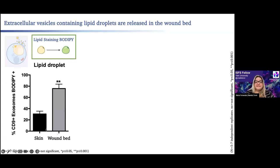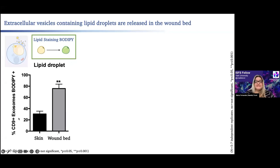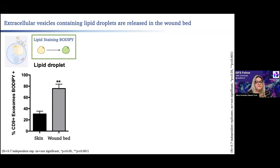To our surprise, the skin actually produces these extracellular vesicles even without a wound, but during the wounding process, after 24 hours we have a great increase. More than 80% of these extracellular vesicles are carrying lipids, which is the big difference between unwounded and wounded skin.